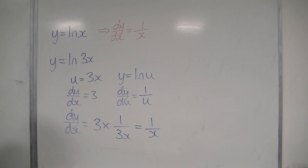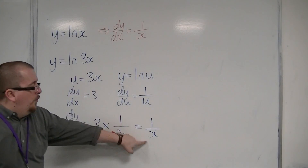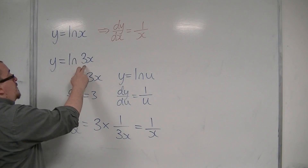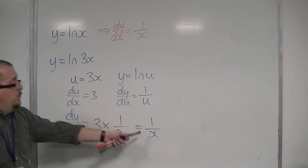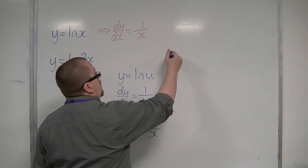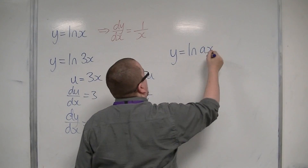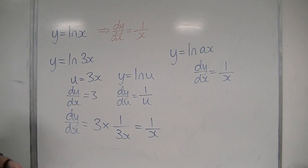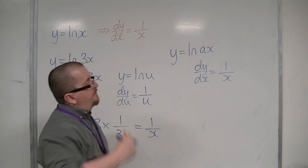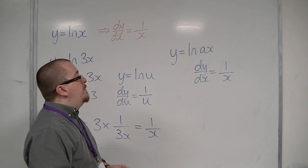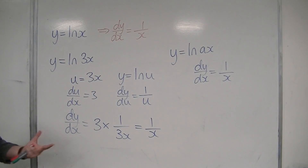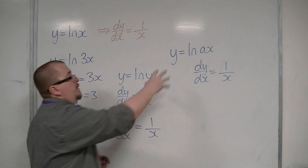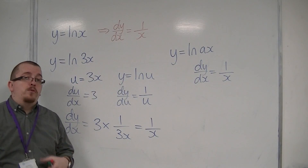So we have 3 over 3x, which is just 1 over x. So in actual fact, what we found is that log of 3x also differentiates to 1 over x. And as it turns out, if I just replace 3 with any old number, they would all differentiate to 1 over x. So in general, y is equal to log of ax differentiates to 1 over x, as long as a is positive — so it needs to be greater than 0 — in which case this is going to work. So it's a very strange kind of identity, but as you can see using the chain rule, it works.